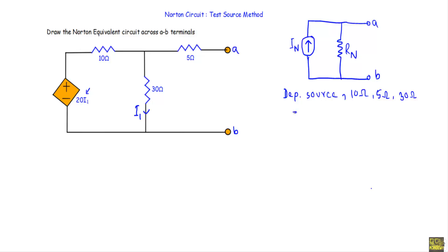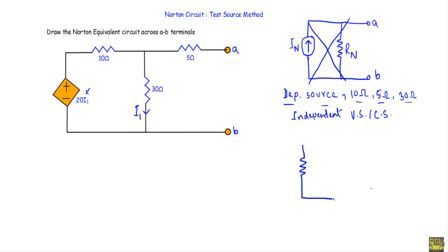There is no independent voltage or current source in the network. Therefore, the IN in parallel with RN will not be the Norton equivalent circuit of the given network. Rather, when the circuit contains only dependent sources and resistors, the equivalent circuit will be a single resistor RN — that means we have to reduce this network to just RN, or Norton resistance, and there will be no current source in the equivalent circuit.